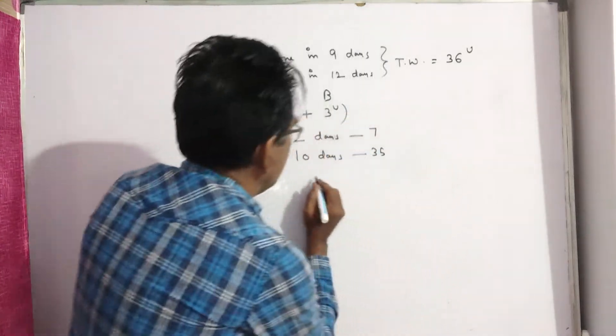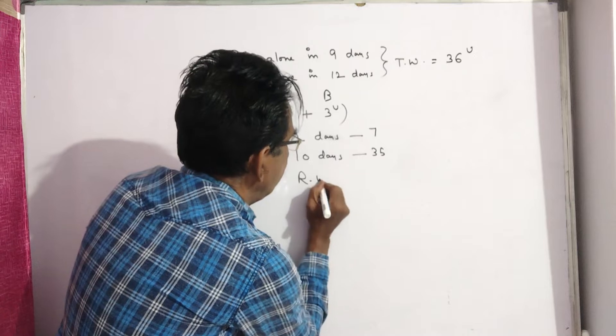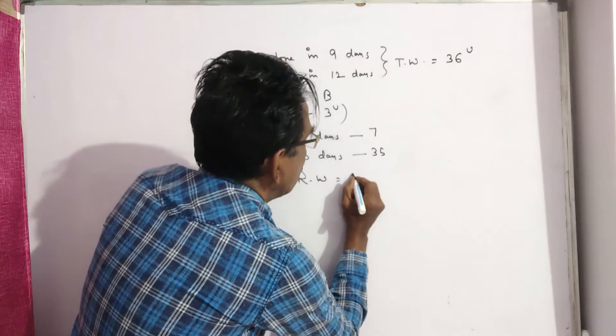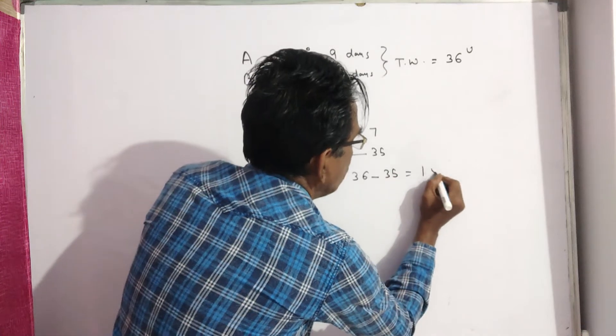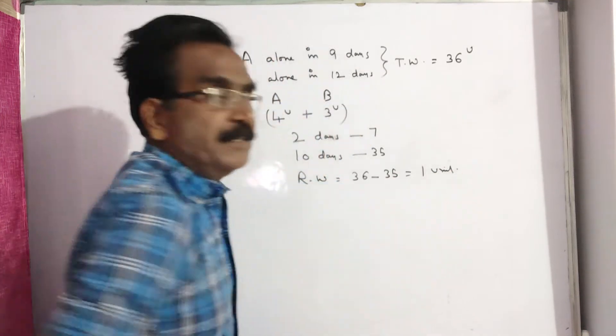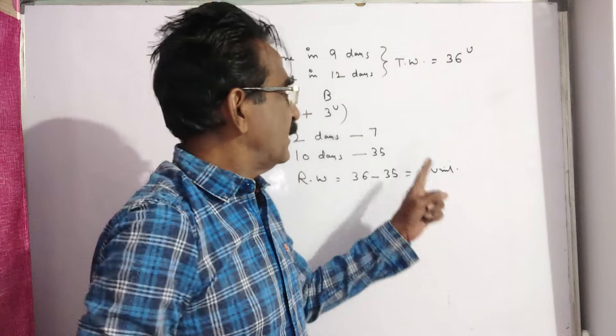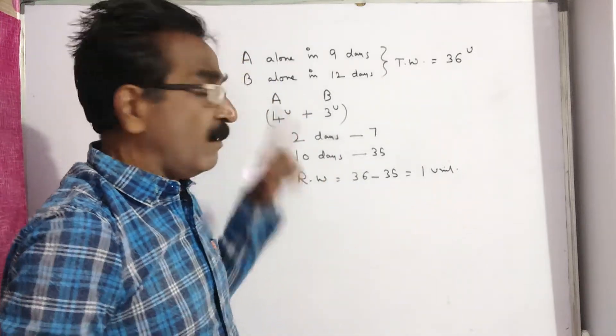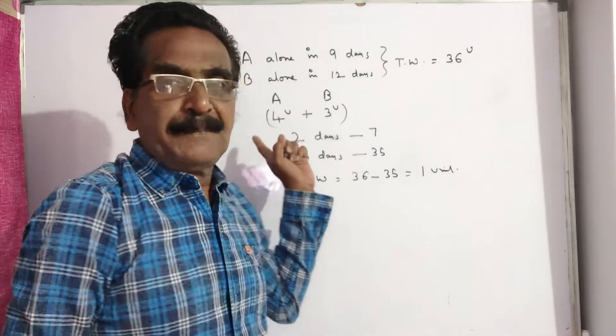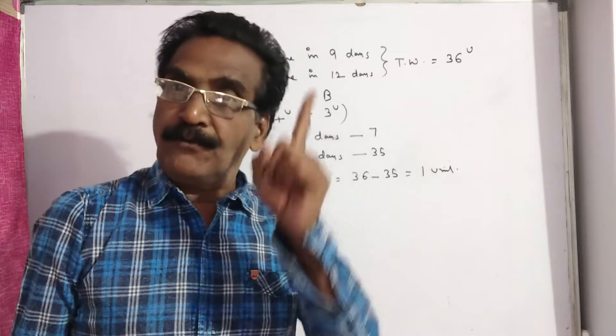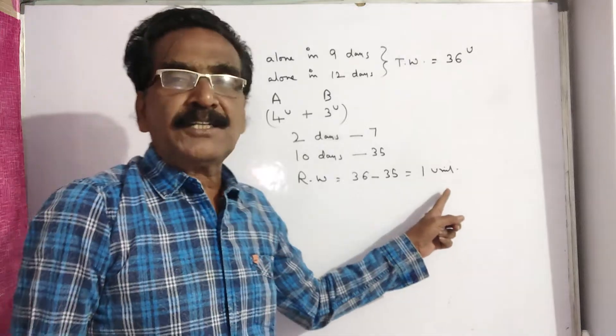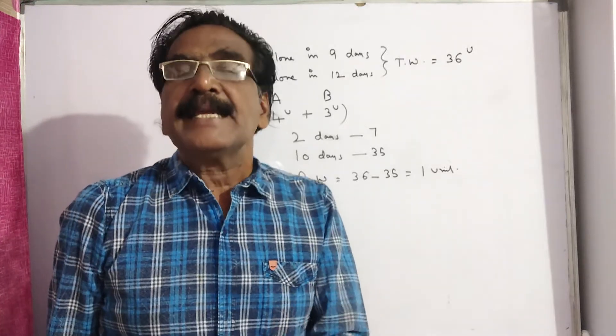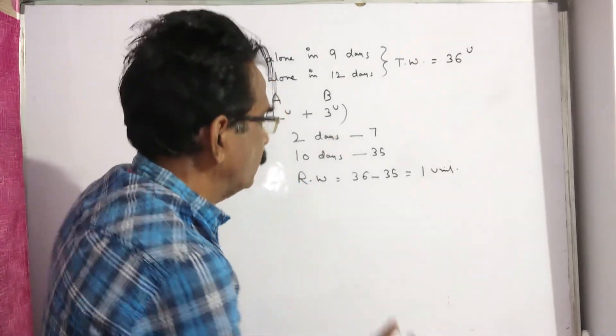And the remaining work is equal to 36 minus 35 that is equal to one unit. So, this one unit of work must be done by A on 11th day. What is the capacity of A? A can do four units of work per day. So, this one unit can be done by A in one-fourth day.